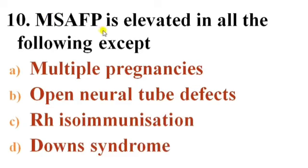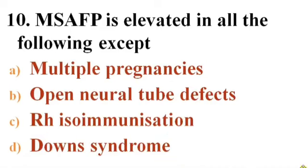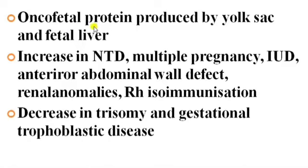Next question: Maternal serum alpha-fetoprotein (MSAFP) is elevated in the following except — Options: A) Multiple pregnancies, B) Open neural tube defects, C) Rh isoimmunization, D) Down syndrome. Answer is D — Down syndrome. MSAFP is decreased in Down syndrome. MSAFP is an oncofetal protein produced by the yolk sac and fetal liver. Its increased level is seen in open neural tube defects, multiple pregnancies, intrauterine fetal death, anterior abdominal wall defects, renal anomalies, and Rh isoimmunization.